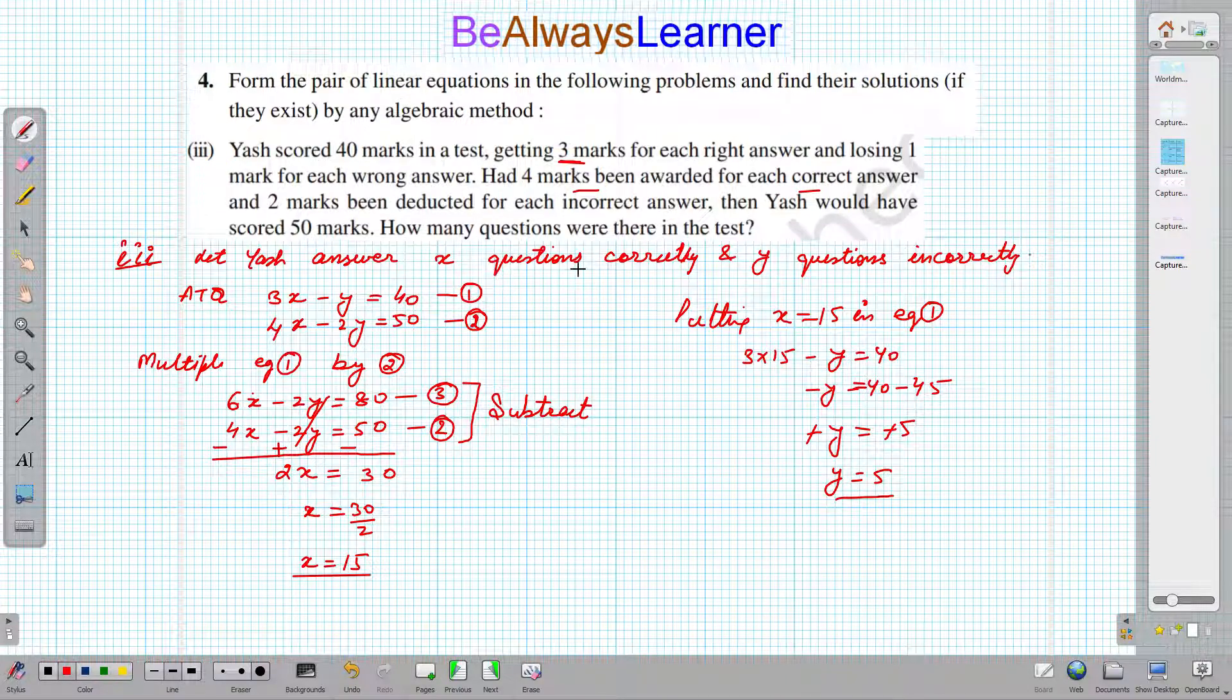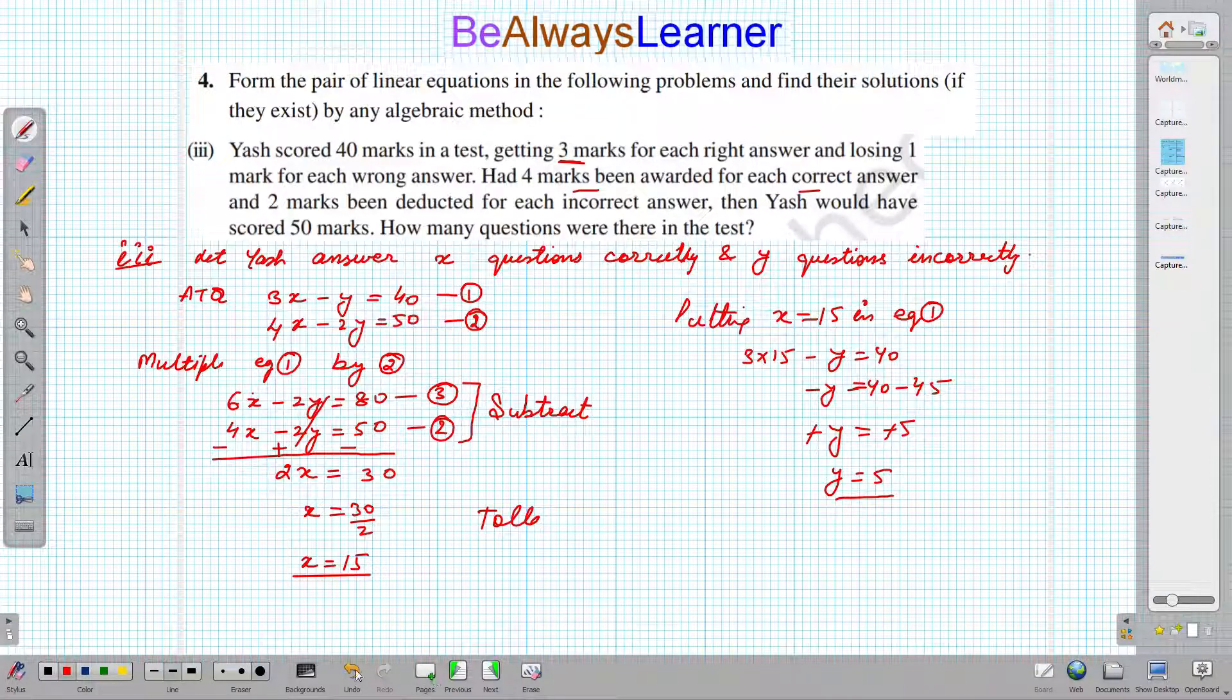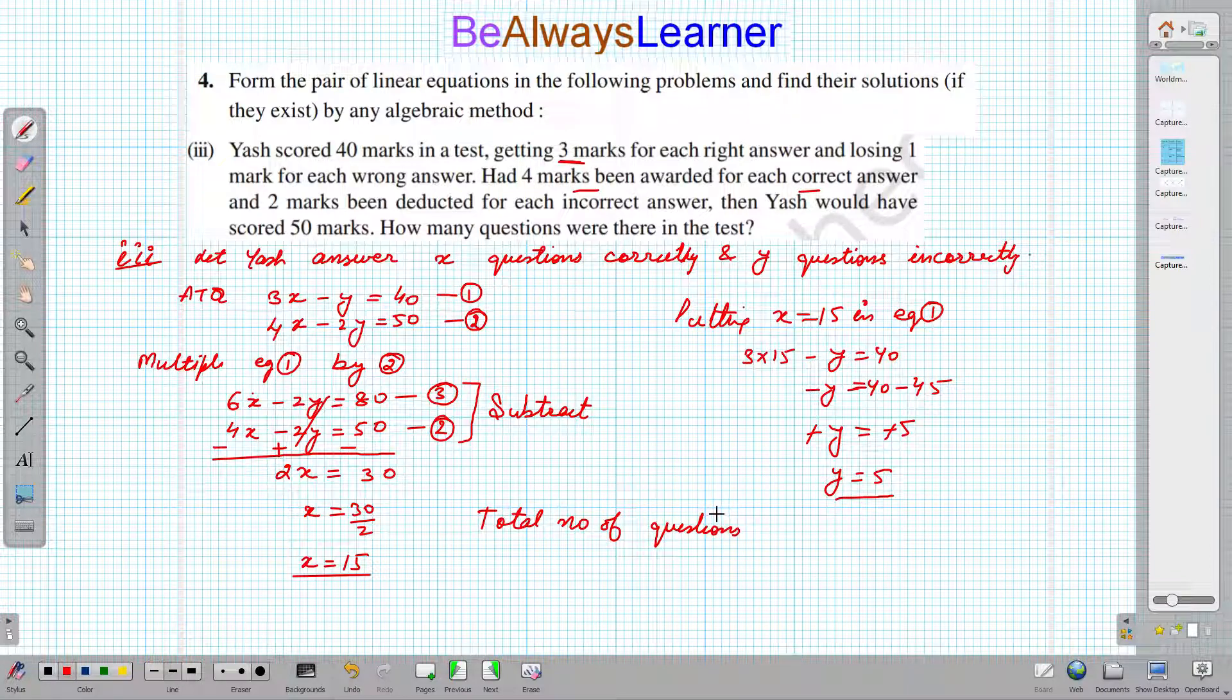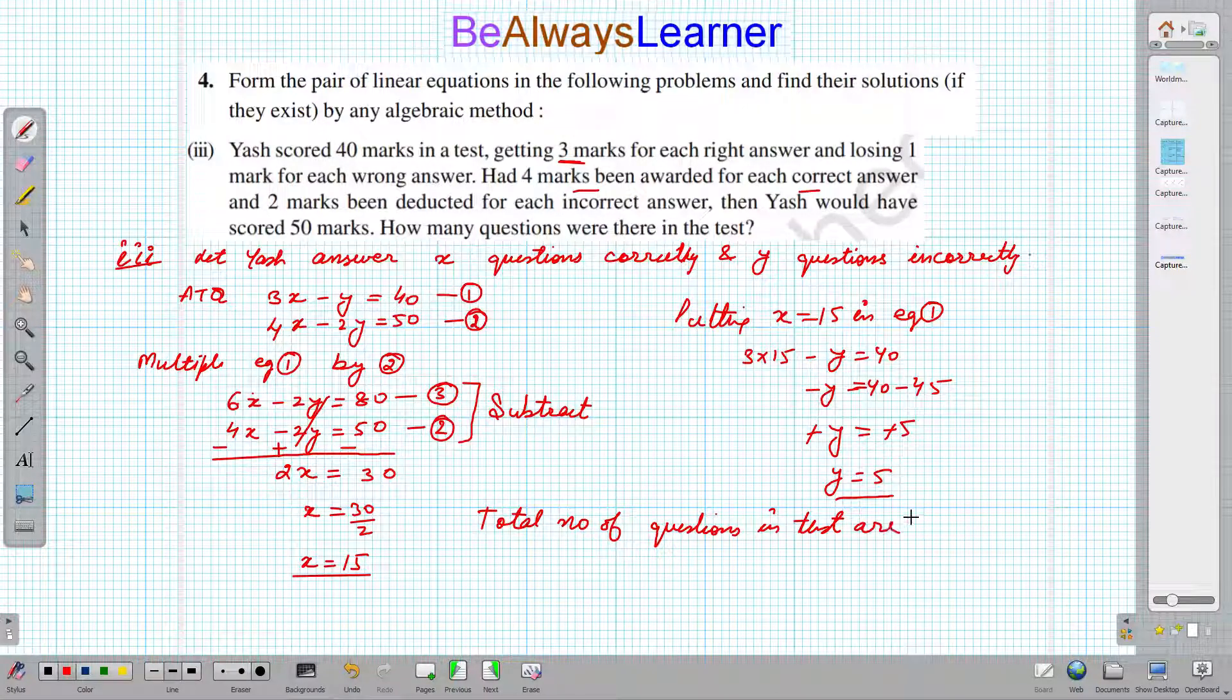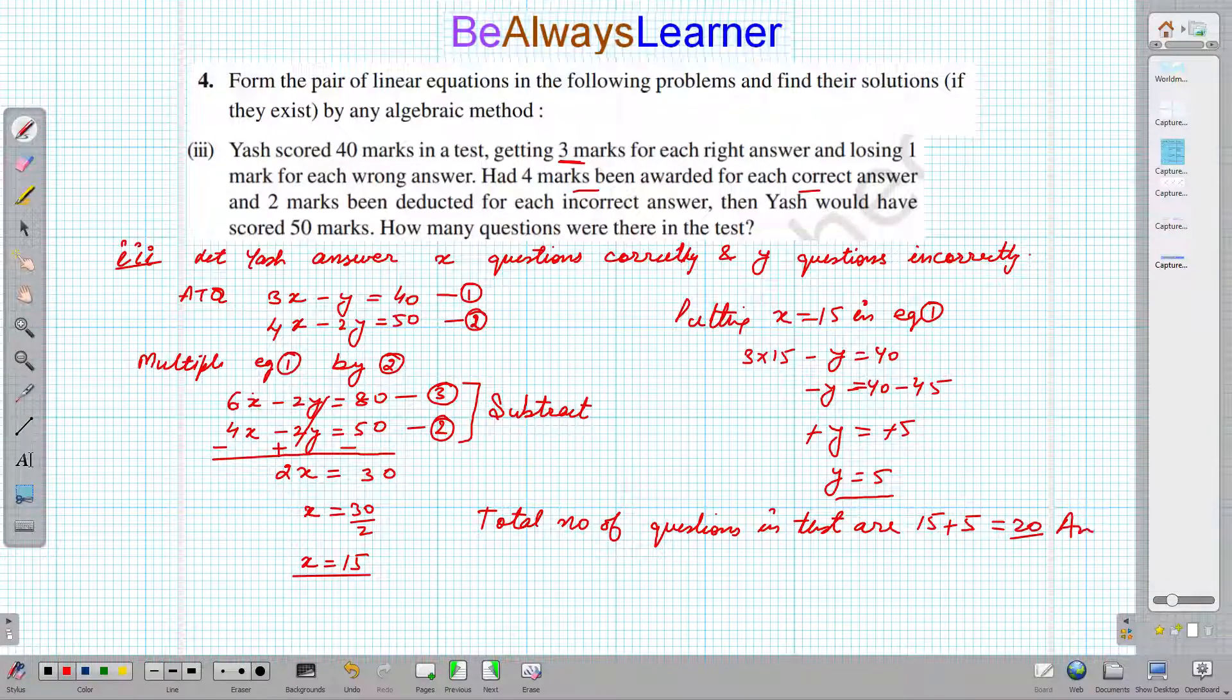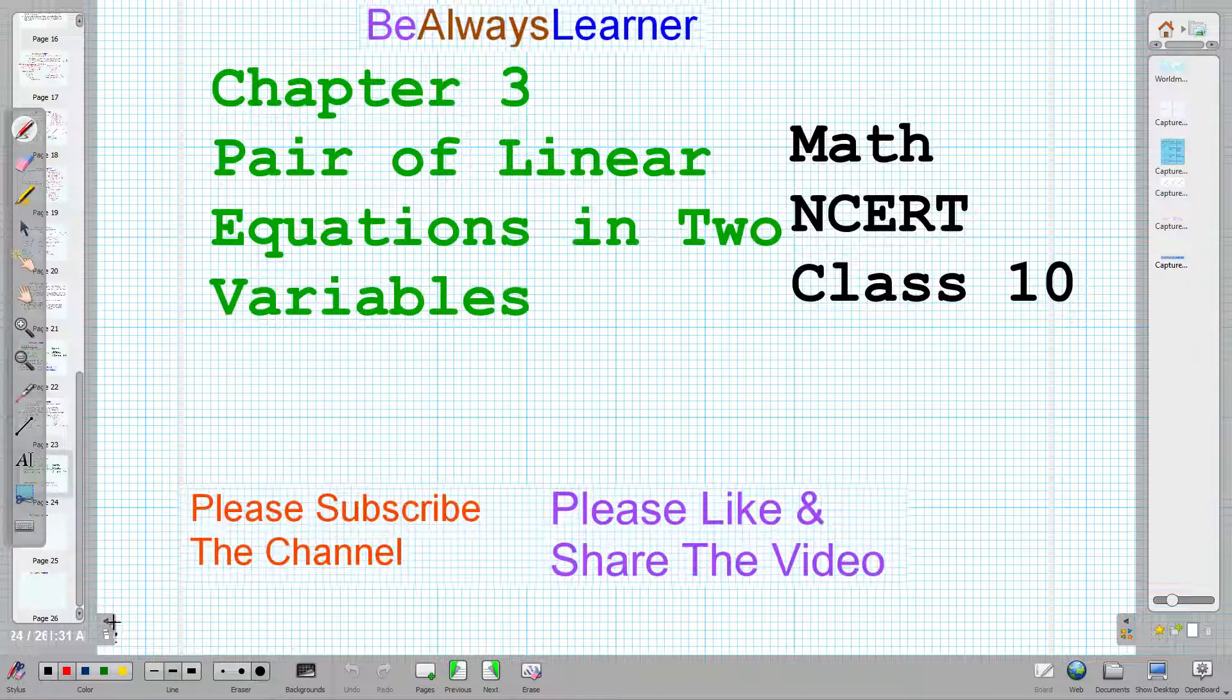We had assumed x for correct answers and y for incorrect answers. Total number of questions in test are x plus y, that is 15 plus 5, that is 20. So 20 questions total in the test. This is the solution. If you liked the video, please like and subscribe.